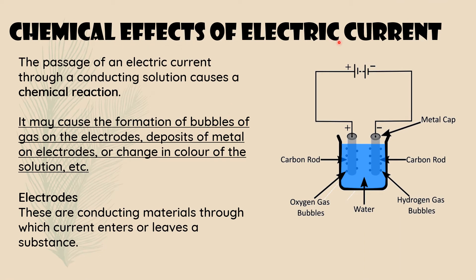For this activity, here one beaker is there and we immerse two carbon rods. These are two carbon rods — you can get them from inside discarded batteries or old cells. However, don't break old cells yourself due to safety issues. If you already have carbon rods available, you can use them. So we have a beaker and two carbon rods, and we connect the carbon rods with wire.